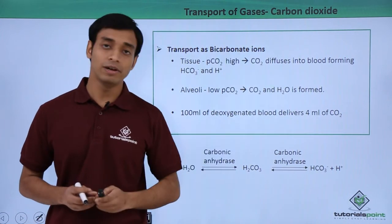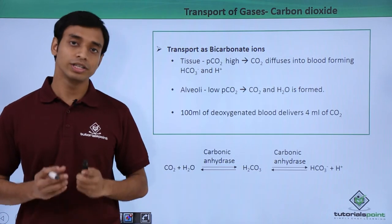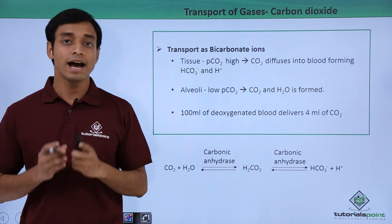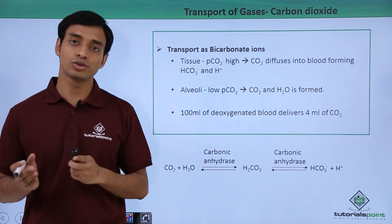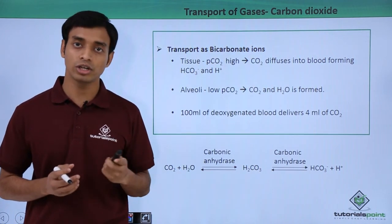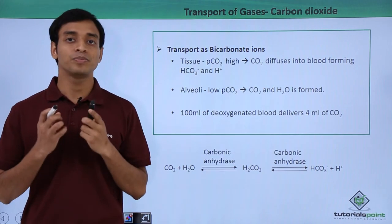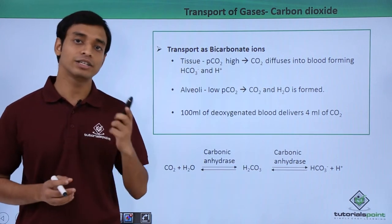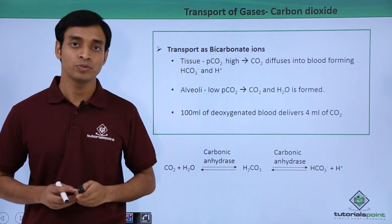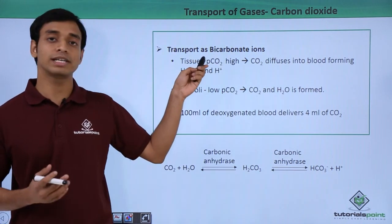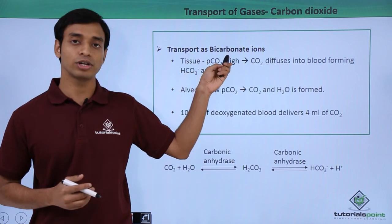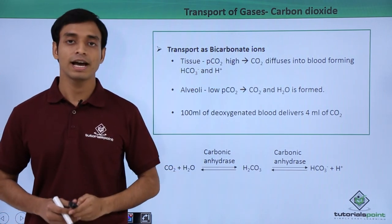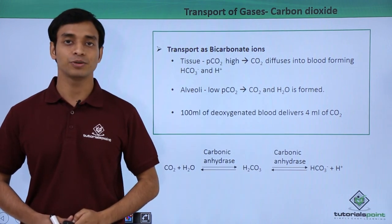In this video we talked about the transport of carbon dioxide — how it is transported from the tissues to the alveoli and released through the nostrils, the conditions that favor the formation of carbaminohemoglobin at the tissue and alveolar levels, how carbon dioxide is transported as bicarbonate ions, and the importance of the enzyme carbonic anhydrase. I hope you have understood. Thank you.